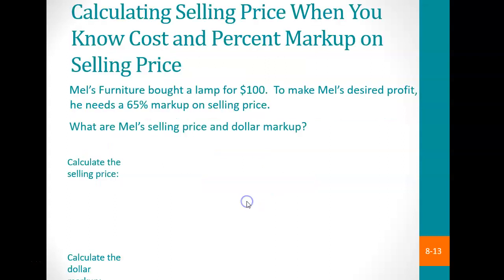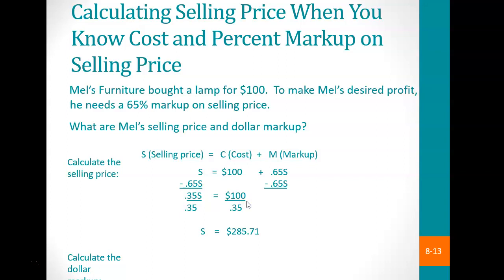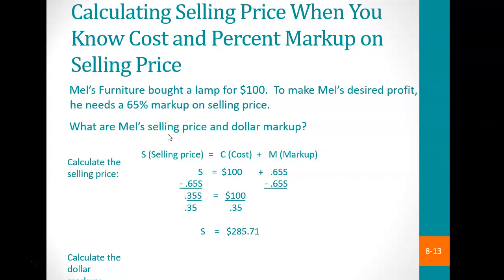At the end of our first lecture, we focused on determining the selling price when the actual markup is based upon the selling price. The lamp had a cost of $100, the desired profit is a 65% markup on the selling price. The question asks: what is the selling price and what is the actual dollar markup?